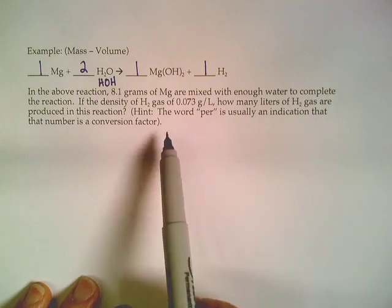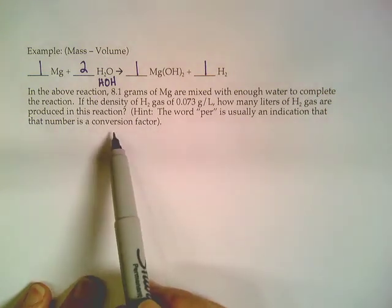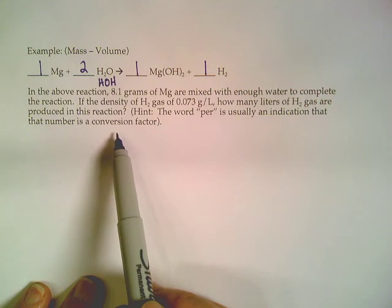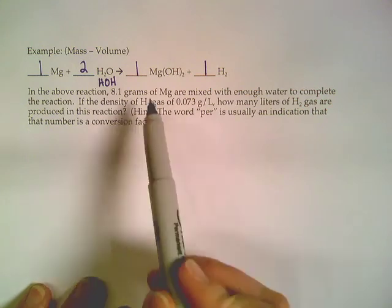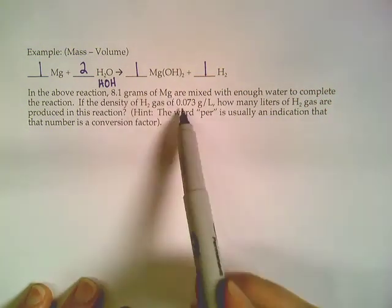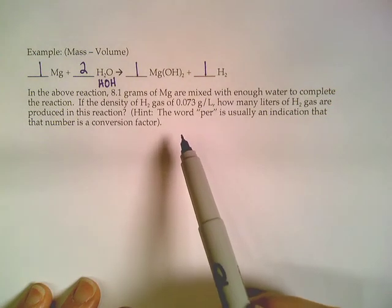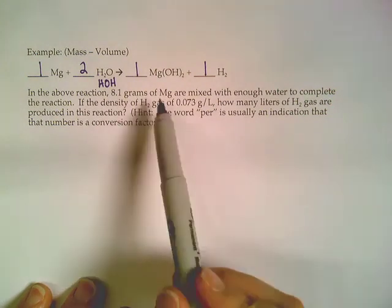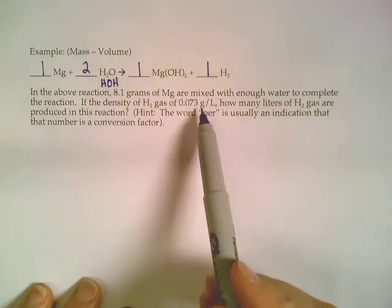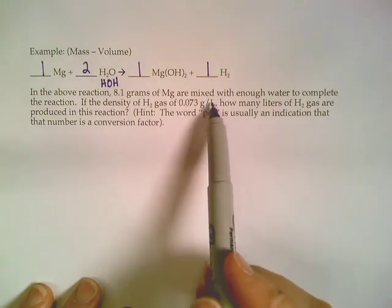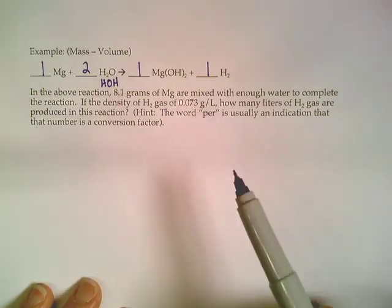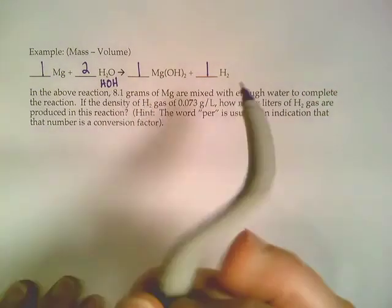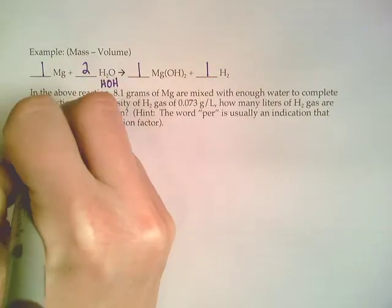You don't want to start with a conversion factor when doing stoichiometry problems - you want to start with a given. So if you're given a few numbers and you don't know which one to start with, you always want to start with the one that has the simpler unit. This is just grams; this is grams per liter, more complicated. Go for whatever one is the simpler one, so that 8.1 grams is where we're going to want to start.